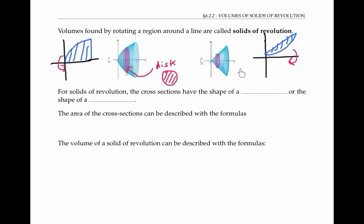The figure on the right is different because it's hollow inside. When we slice it by planes perpendicular to the x-axis, we get cross sections that are shaped like washers. A washer here means the region in between two concentric circles. So for solids of revolution, the cross sections can have the shape of a disk or the shape of a washer.